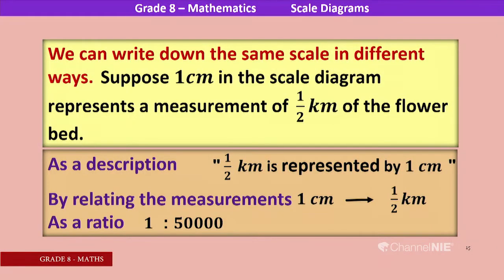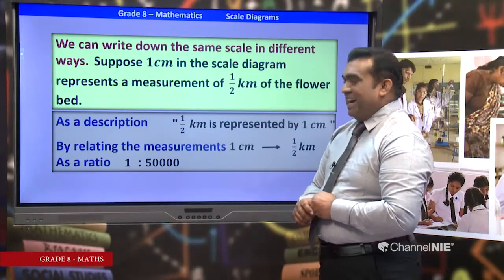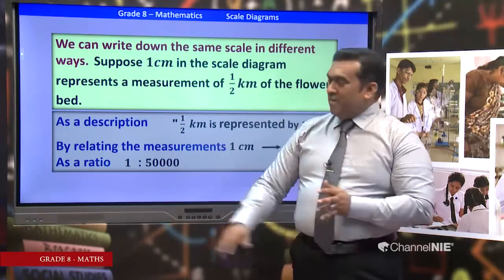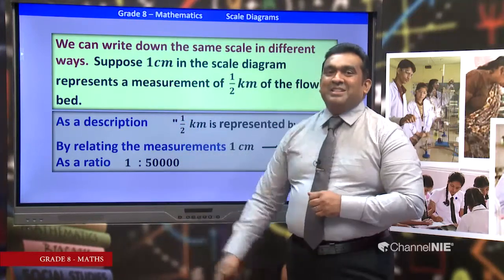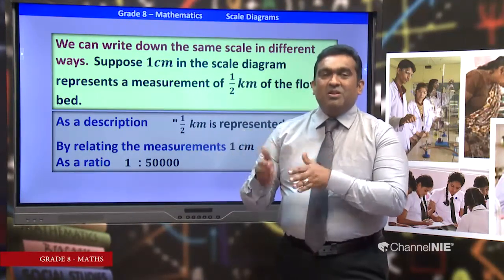As a ratio: 1 centimeter represents half a kilometer. Convert half a kilometer to meters — half multiplied by 1000 equals 500 meters. Then convert meters to centimeters: 500 multiplied by 100 equals 50,000 centimeters. As a ratio: 1 is to 50,000, with the same unit on both sides — 1 centimeter represents 50,000 centimeters, so the ratio is 1:50,000.